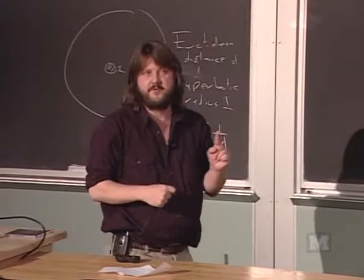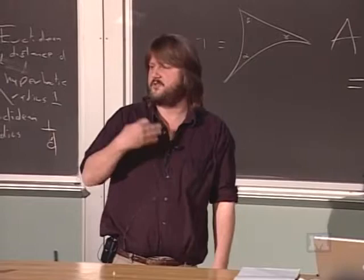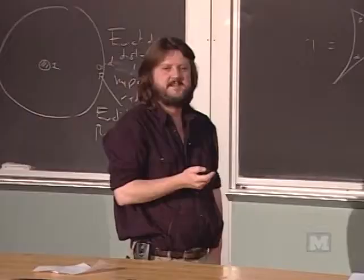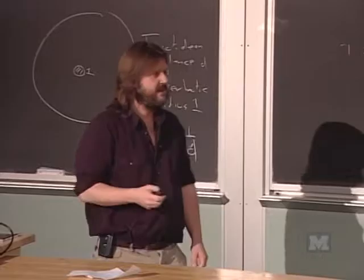There's a whole other collection of surfaces — non-orientable surfaces — which you can only make in four dimensions. You have to prove a theorem to say you can't embed them in three dimensions. In general, if you take a surface with G holes, you can cut it along 2G curves and get a polygon with 4G sides. If you make each internal angle pi over 2G and glue it back up, you get 4G times pi over 2G, which is 2 pi — a nice hyperbolic surface of genus G.